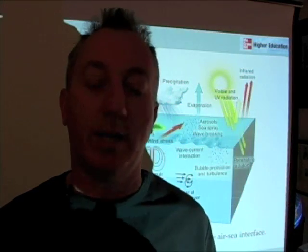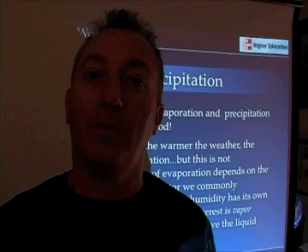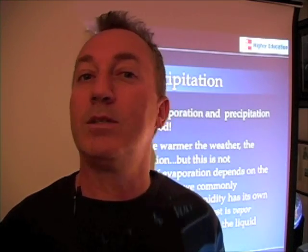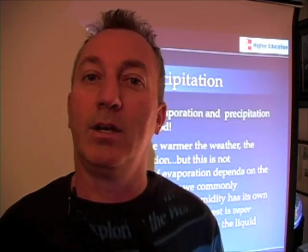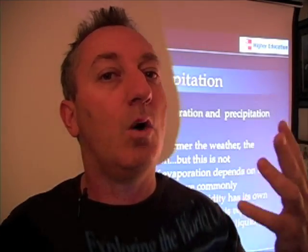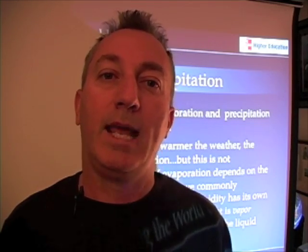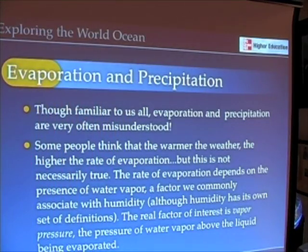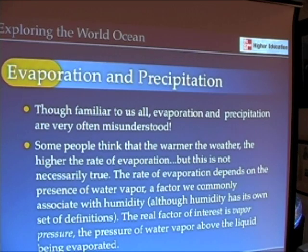By the same token, if you go somewhere like up in the mountains where it's nice and cold, you can actually evaporate and lose water very quickly because the air is very dry. So temperature isn't always the only indicator of rates of evaporation. The real factor we really want to pay attention to is something called vapor pressure — it's the pressure of water vapor, some expression of the amount of water vapor above a liquid that's been evaporated.